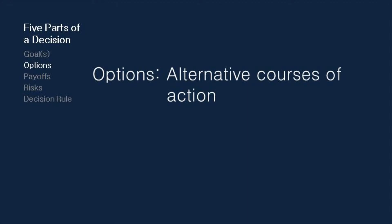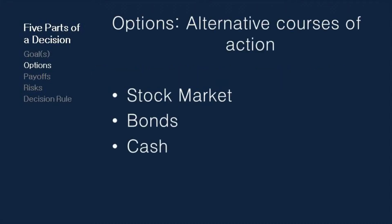Once we've pinned down what we're looking for, the next step is to enumerate our options — alternative courses of action, things that we can do to reach our goal, which is to accumulate money. For simplicity's sake, let's say that Roy can do one of three things: he can invest his savings in the stock market, he can invest it in bonds, or he can keep it in cash.